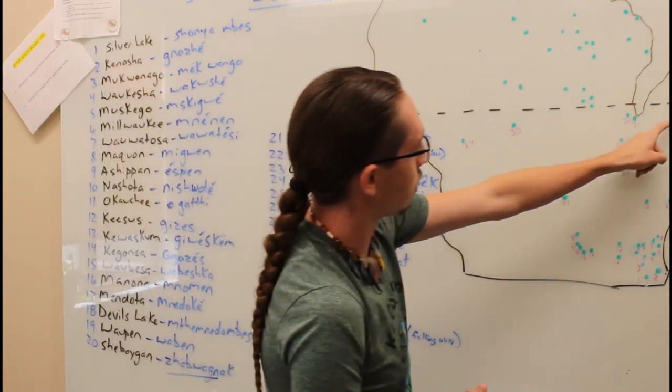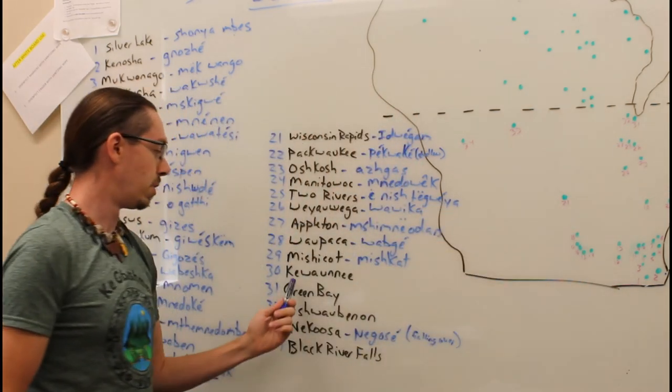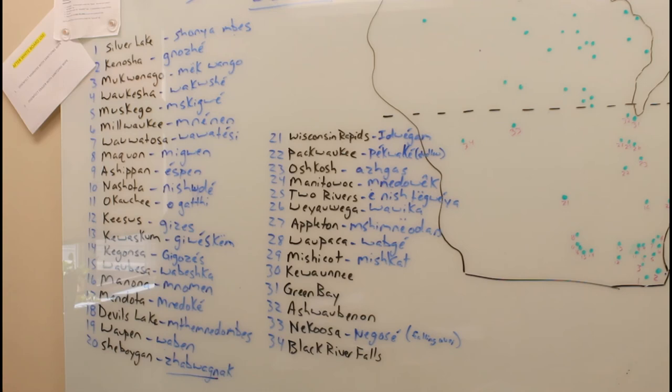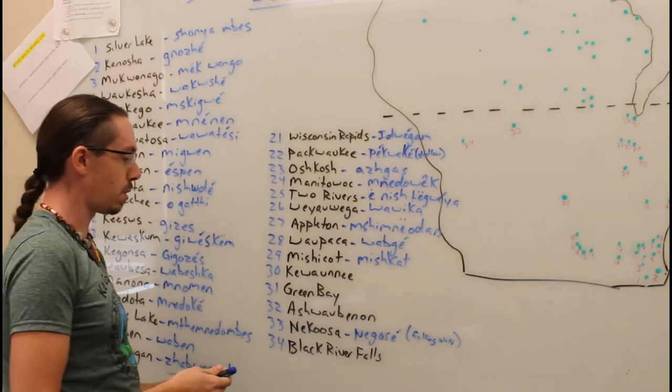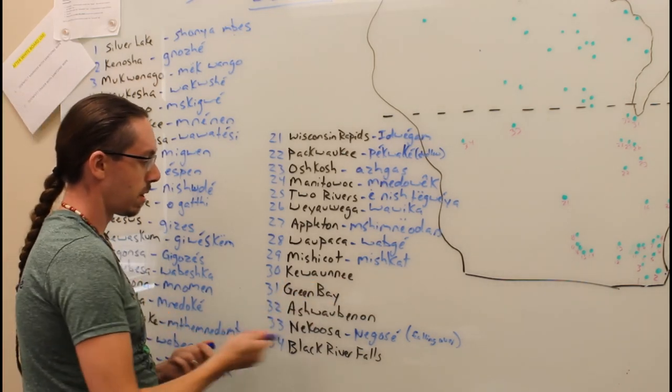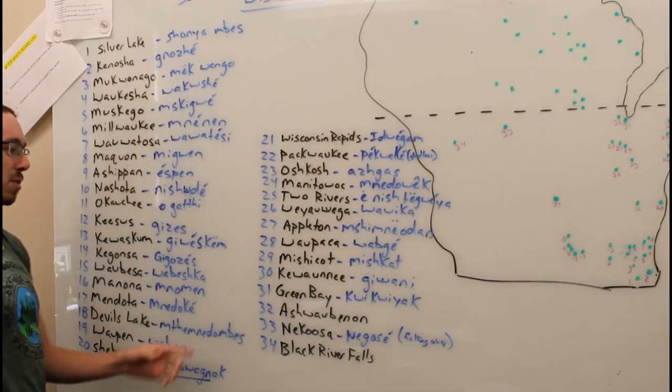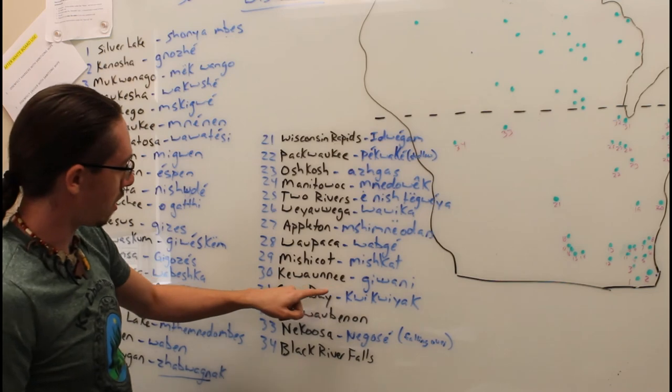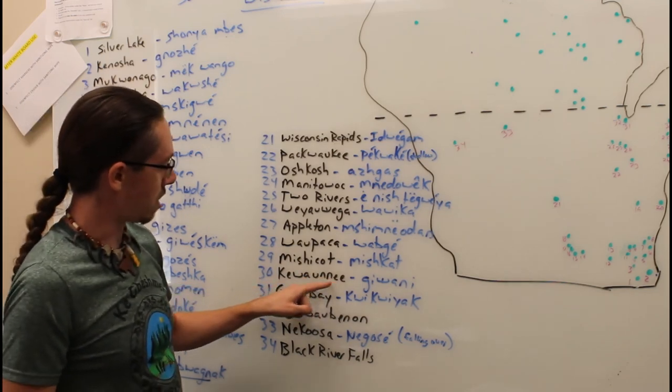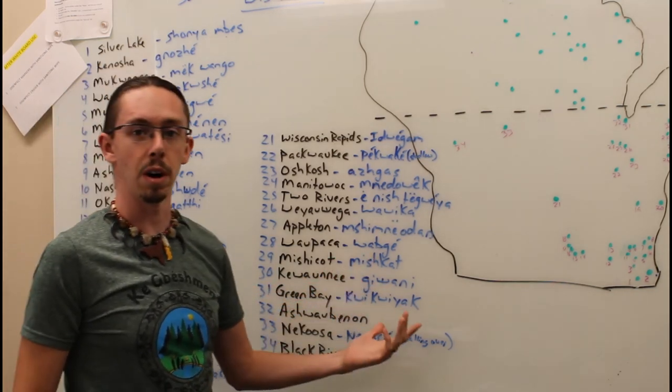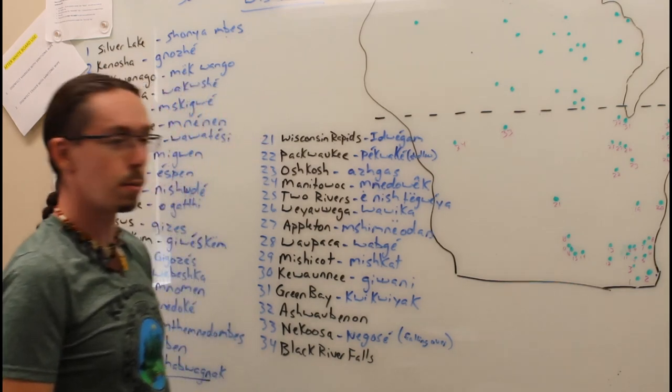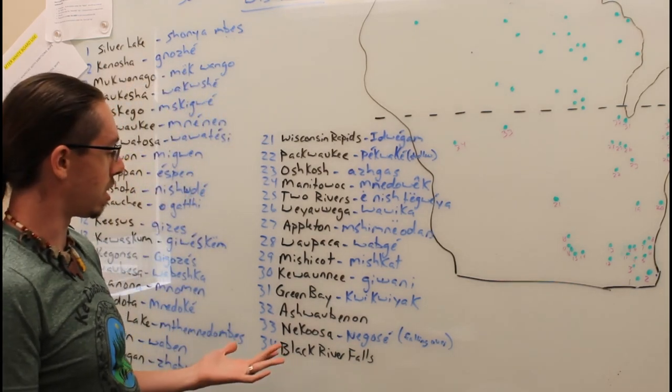We're up to number 30 there. You'll see this one again. It was in our last video about Indiana and Illinois. We had a technical issue there. Kewaunee, Wisconsin, called Kiwani. Kiwani is a prairie chicken or he or she is lost.